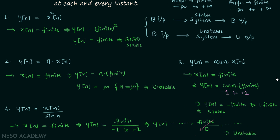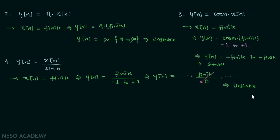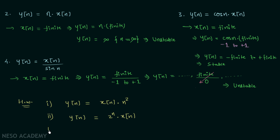This is all for the examples, and now we move on to the homework problems. There are three homework problems. In the first homework problem, y[n] is equal to x[n] multiplied by n squared. In the second homework problem, y[n] is equal to the input signal x[n]. In the third homework problem, output y[n] is equal to the even part of input signal x[n]. Try to find out whether the systems having these three relationships are stable or unstable.